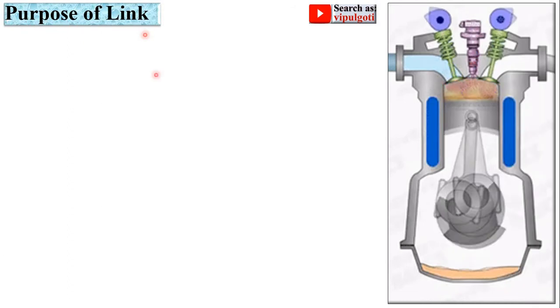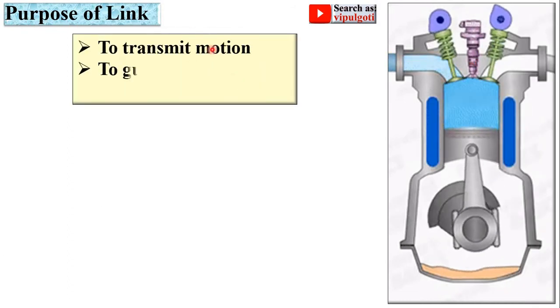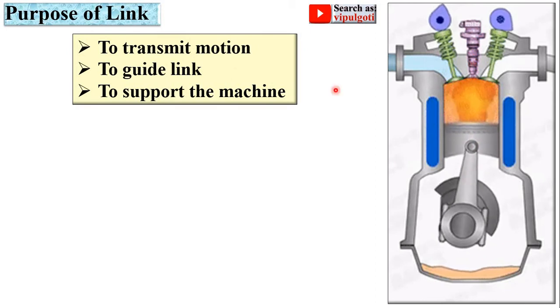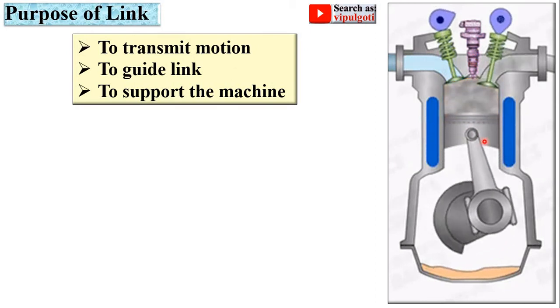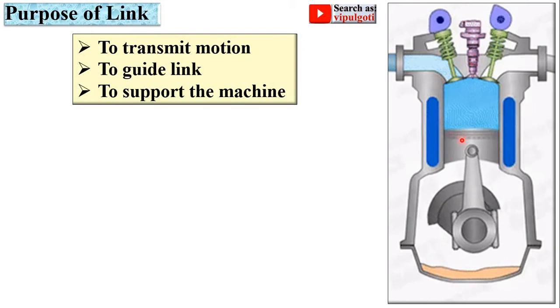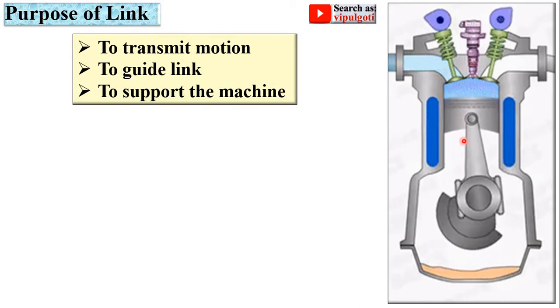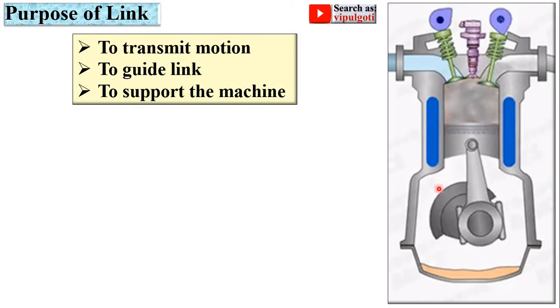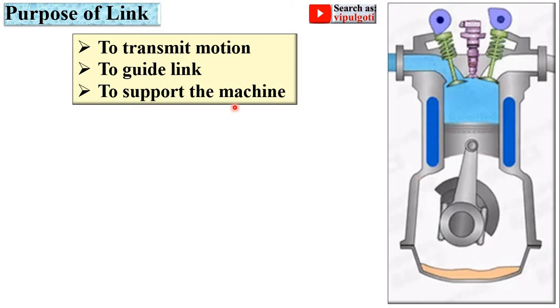Next, the purpose of link: to transmit motion, to guide the link - here you can see the cylinder guides the piston for the reciprocating motion - and to support the machine, which is generally called the frame.